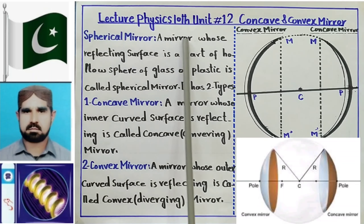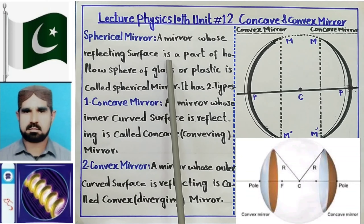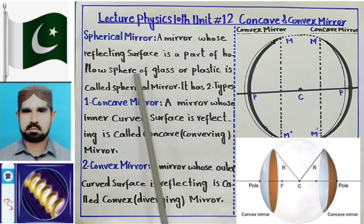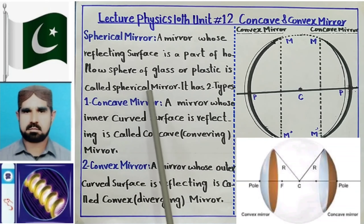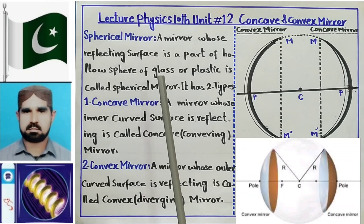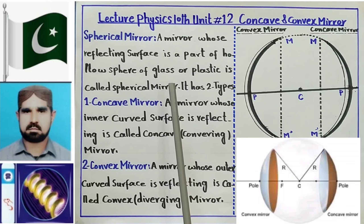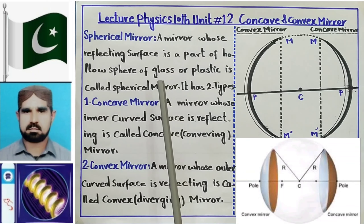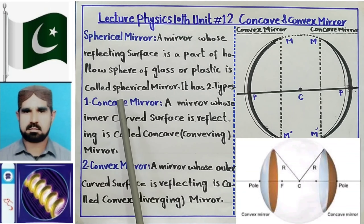A mirror whose reflecting surface is a part of a hollow sphere made of glass or plastic is called a spherical mirror. अगर कोई mirror हो, वो किसी sphere का हिस्सा हो, उसकी अंदर वाली या बाहर वाली सतह reflecting हो, तो ऐसे mirror को spherical mirror कहते हैं। Spherical mirrors दो तरह के होते हैं।